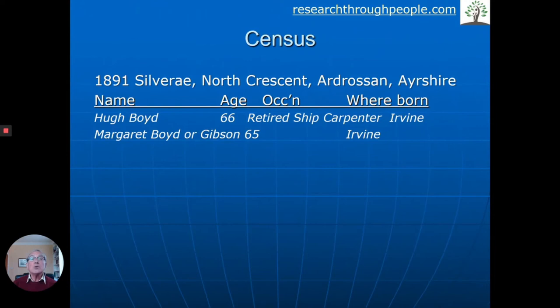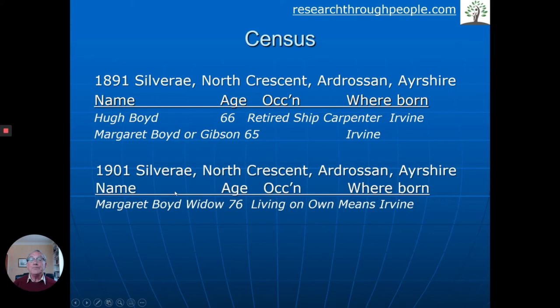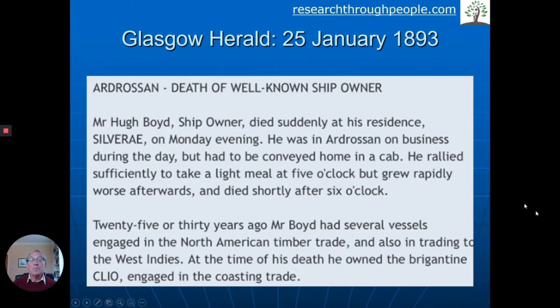We went to the census and sure enough, in 1891 there's the house. Living there is Hugh Boyd, retired ship carpenter, from Ball and Irving, quite near Ardrossan — aged 66 — and his wife Margaret Boyd, or Gibson, possibly her maiden name. In 1901 she appears again, but Margaret is now a widow, so clearly Hugh had died in the ten years between. We looked in the newspapers and found that the ship owner actually had an obituary in the Glasgow Herald in 1893.